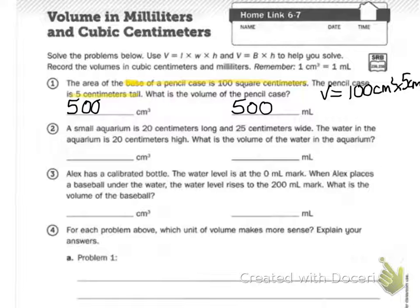Number 3 says Alex has a calibrated bottle. The water level is at the 0 milliliter mark. When Alex places a baseball under the water, the water level rises to the 200 milliliter mark. What is the volume of the baseball?